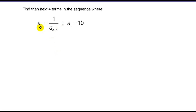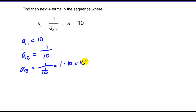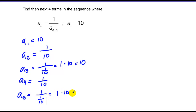Here's another example: a sub n equals 1 over a sub n minus 1. My first term is 10. My second term equals 1 over the previous term, which is 10, so one tenth. My third term is 1 over one tenth, which equals 10. My fourth term is 1 over 10, and my fifth term is 1 over one tenth, or 10. So this sequence just alternates between 10 and one tenth.